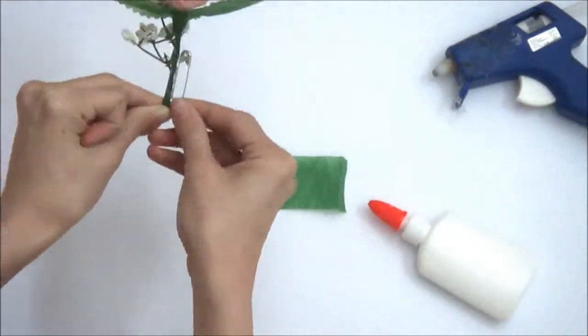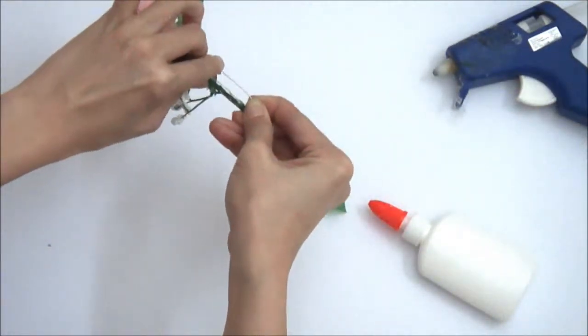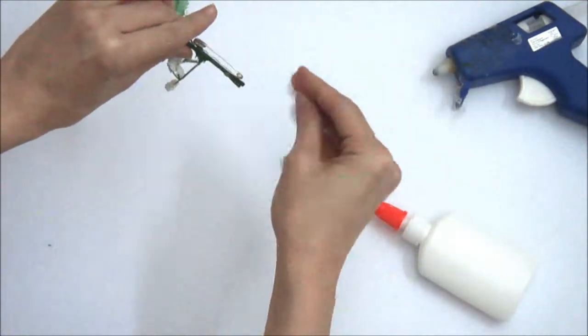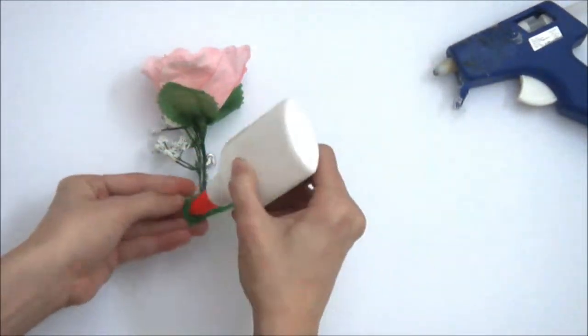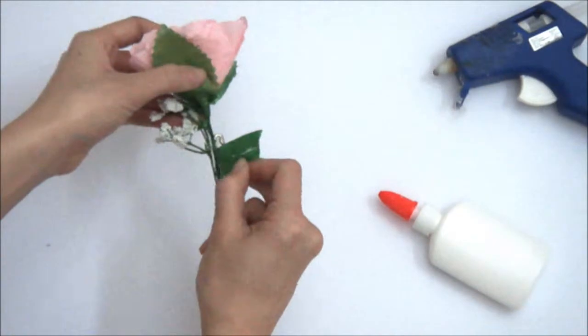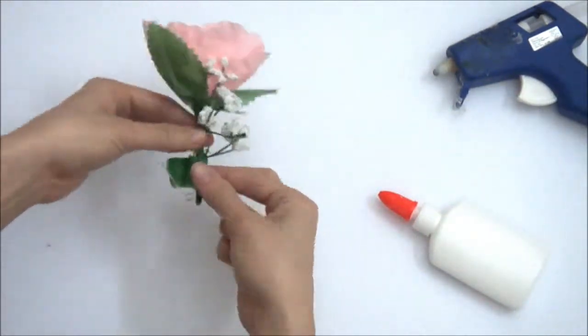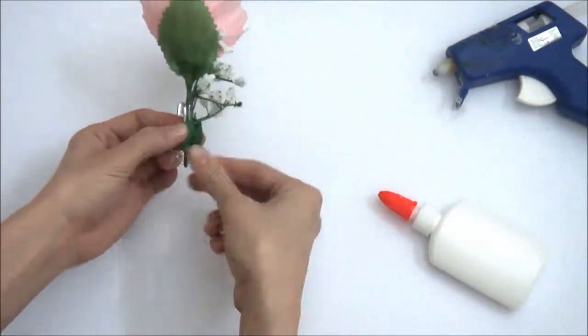So here I'm adding the pin. Once this is done, I'm going to add the extra green paper and just wrap it around the stem, the pin and the filler as well just to secure it.